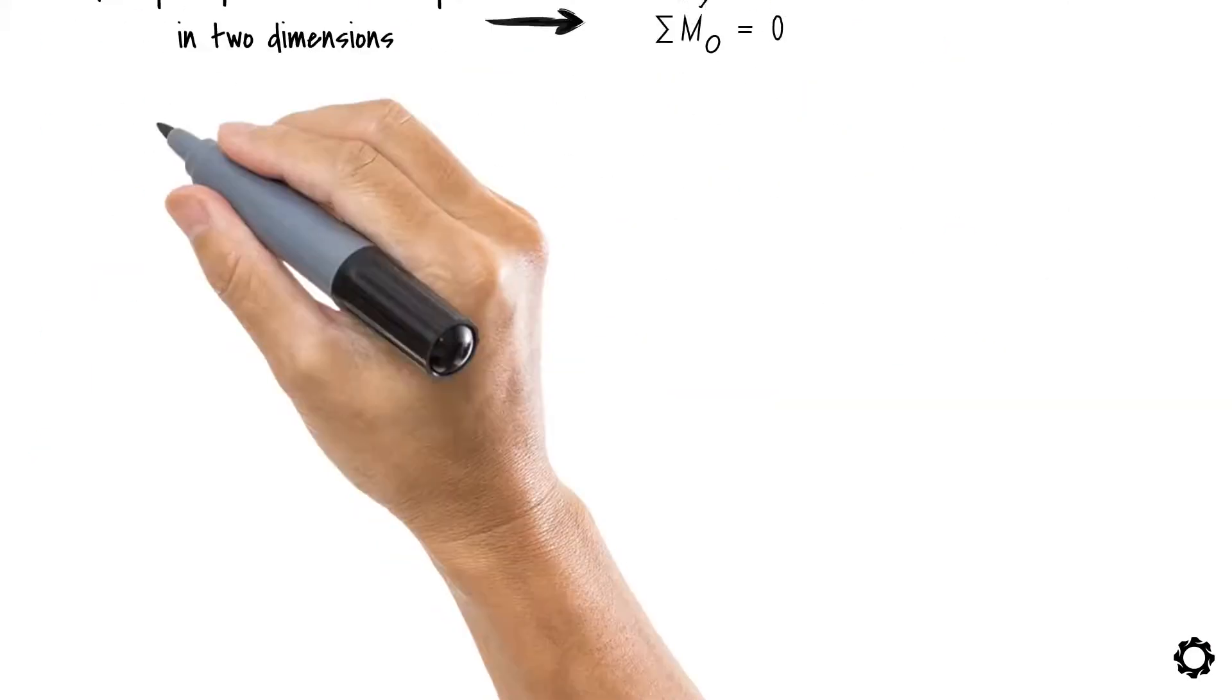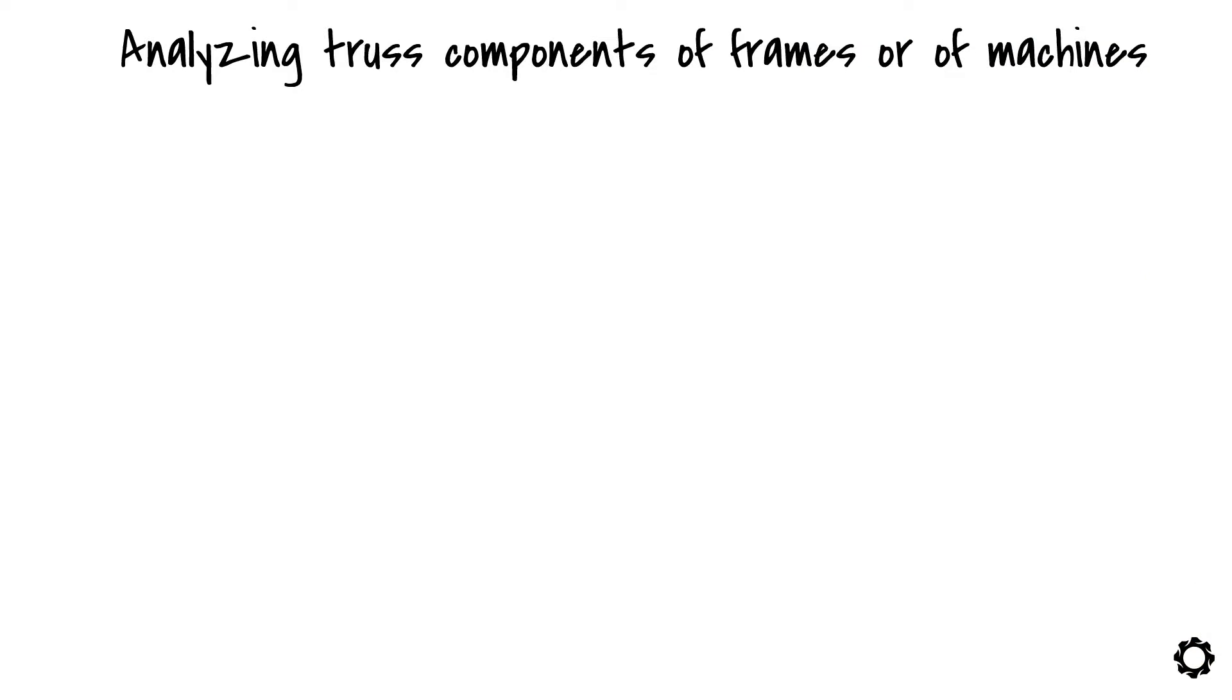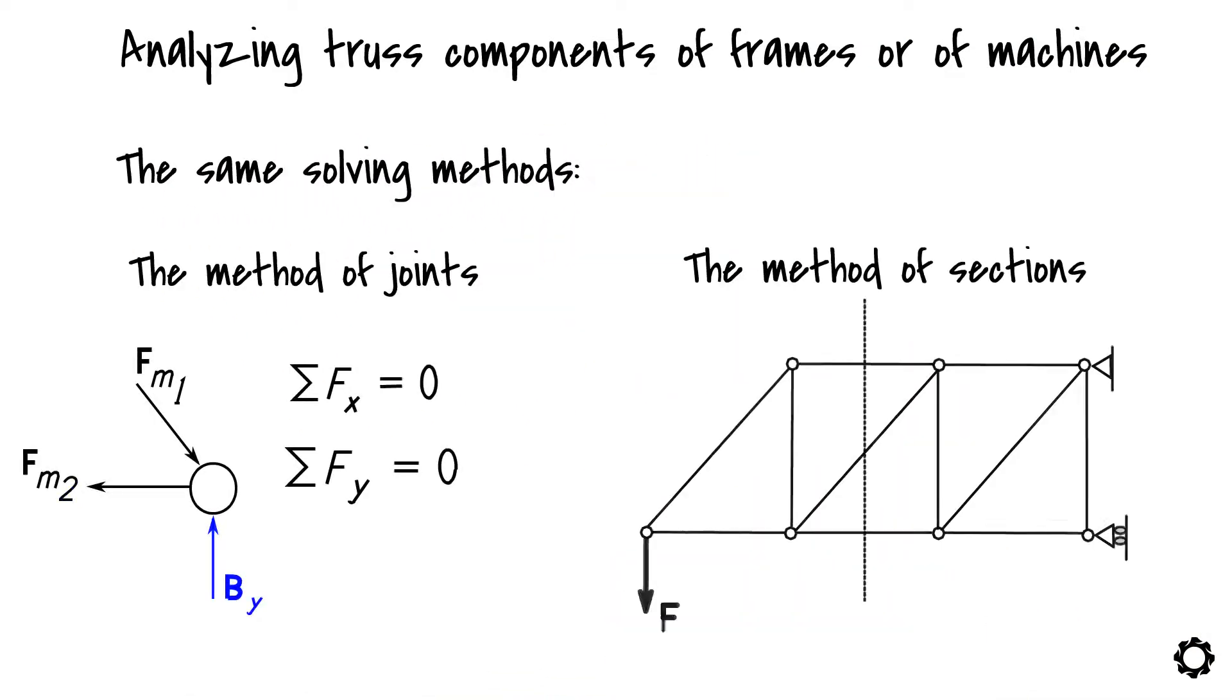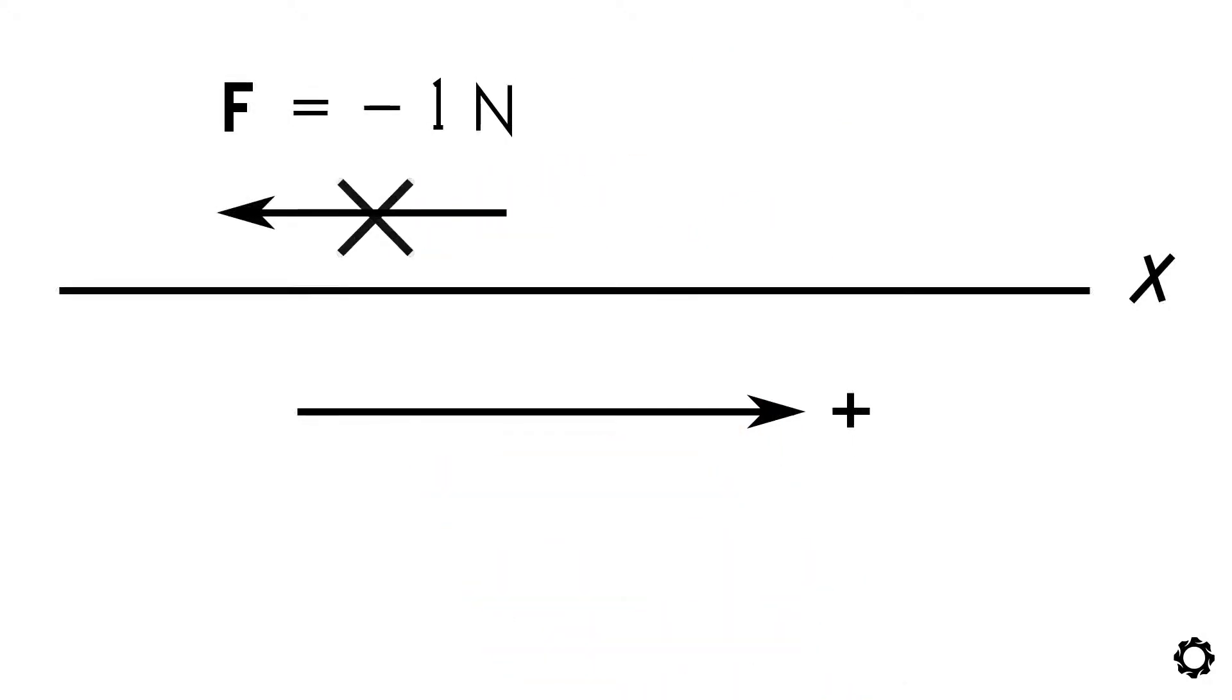In case of analyzing truss components of frames or of machines, we can also use the same solving methods that we learned during the earlier videos which were related to trusses. If by any chance your external or support force solution would have a negative magnitude, then this just means that the direction of that force was determined wrongly in the free body diagram and its direction is actually reversed. There you have it.